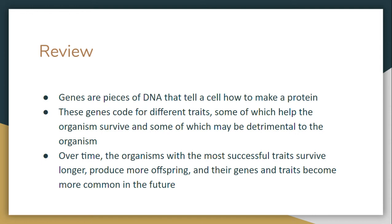Some of these traits don't help the organism to survive, or even put it in harm's way, which we call detrimental. Over time, the organisms that have the most successful traits and the least detrimental traits live longer. The longer they live, the more chances they have to mate and produce offspring. And the more offspring they have, the more their successful traits and genes appear in the future.